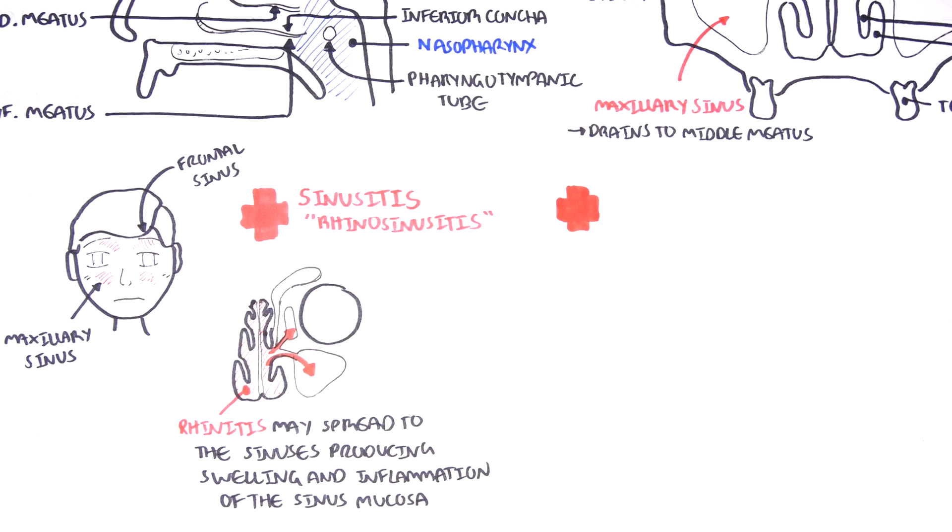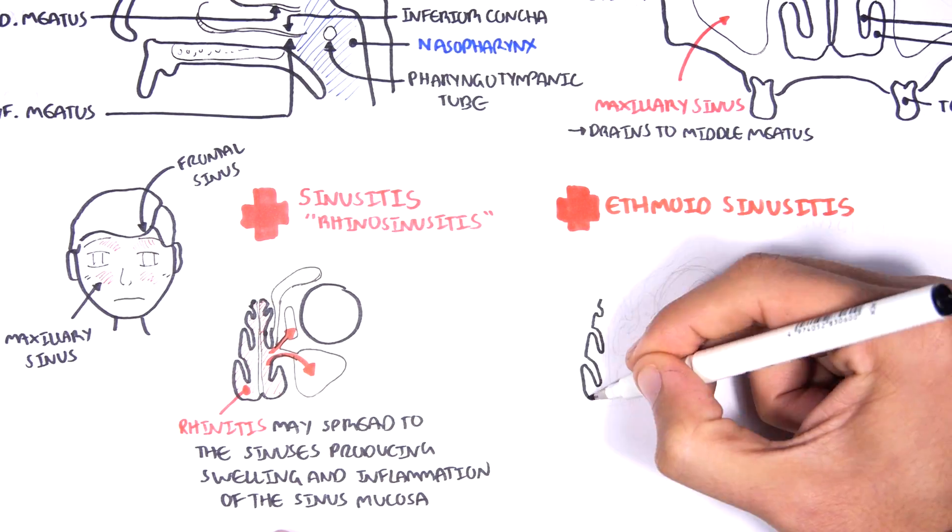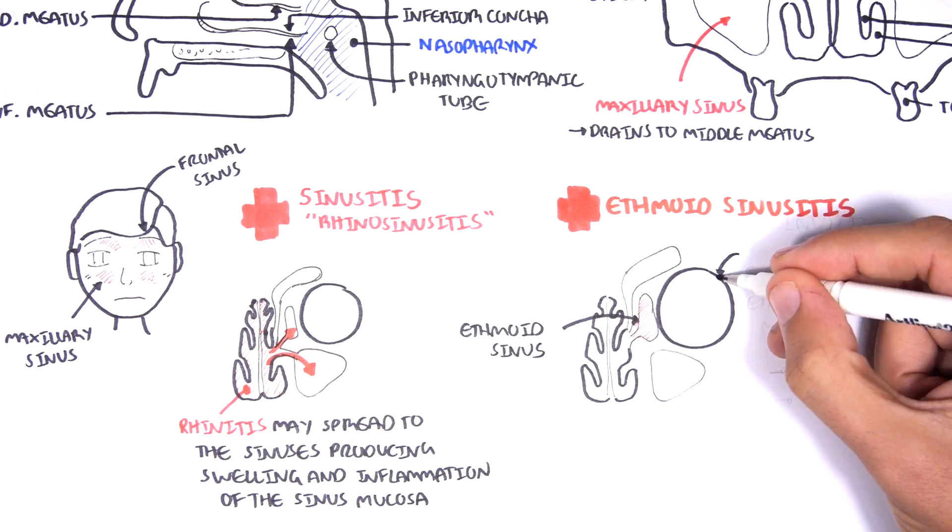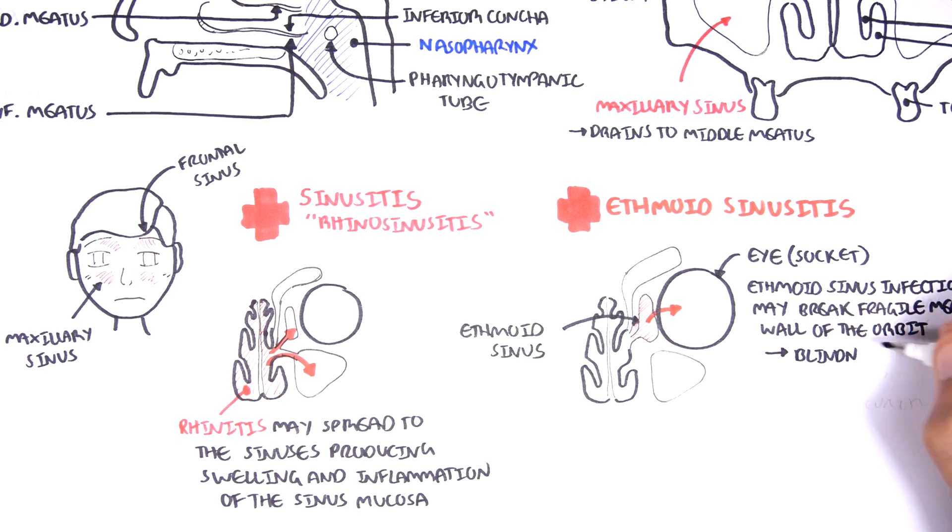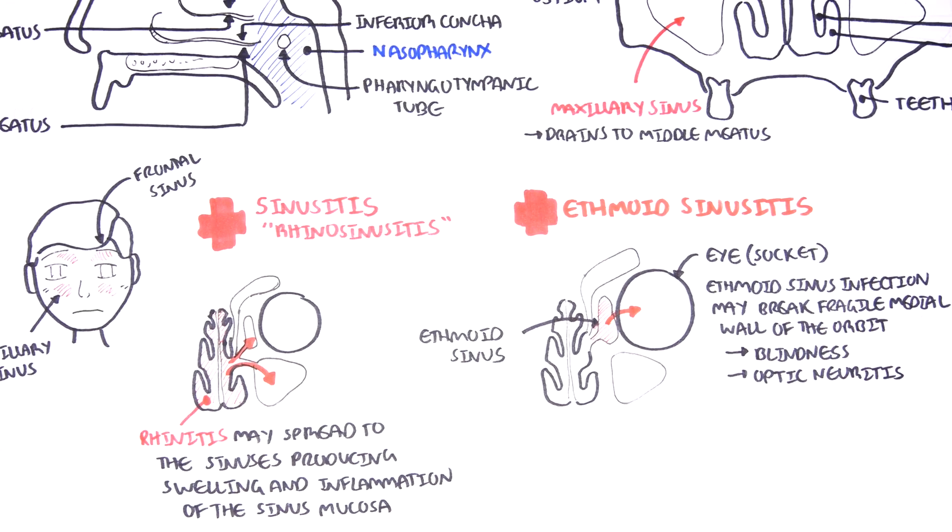Let's talk about complications of sinusitis. So ethmoid sinusitis is of particular concern. Ethmoid sinus infection may break the fragile medial wall of the orbit, allowing infection to spread to the eye, which can cause blindness or even optic neuritis.